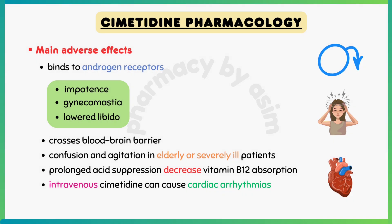Prolonged acid suppression can decrease vitamin B12 absorption. If administered rapidly, intravenous cimetidine can cause cardiac arrhythmias.